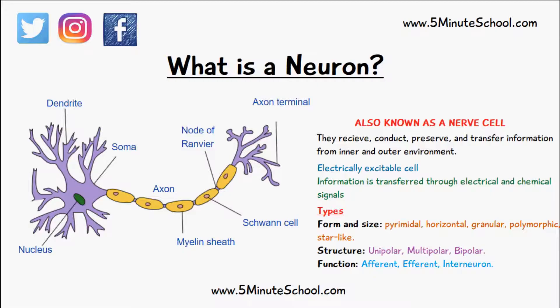Efferent neurons are motor neurons heading from either the brain or the spinal cord to a muscle or an organ. We also have interneurons, which form the connection between afferent and efferent neurons.